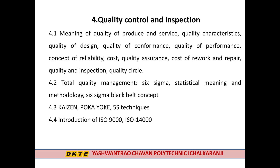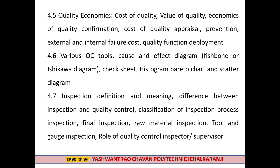The fourth chapter is Quality Control and Inspection. Sub-topics include Meaning of Quality, Quality Characteristics, Quality of Conformance, Quality of Design, Quality of Performance, Reliability, Quality Cost, Quality Assurance, Cost of Rework, Total Quality Management (TQM), Six Sigma Statistical Meaning and Methodology, Six Sigma Black Belt Concepts, Kaizen, Poka-Yoke, 5S Techniques, Introduction to ISO, Different ISO Types, and Gauge Economics.